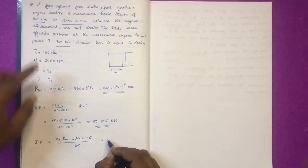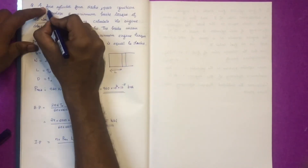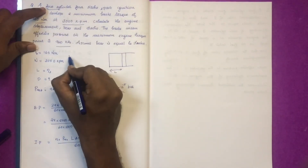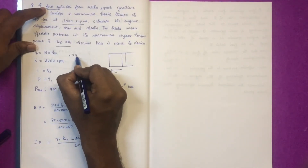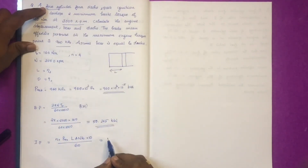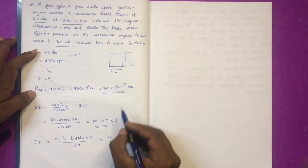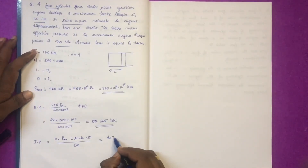For 4 cylinders, N = 4. We now substitute the mean effective pressure of 960 × 10³ Pa into the power equation.